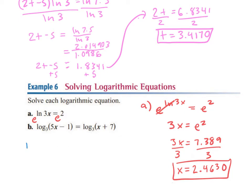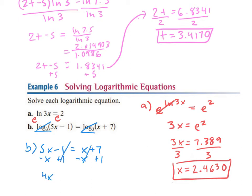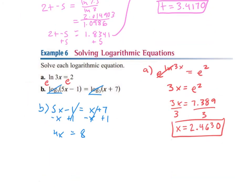For part b, we have log base 3 on each side of our equation. Anytime we have logs with the same base, one on each side, they cancel each other out and we just set the rest equal to each other. So we have 5x minus 1 equals x plus 7. We subtract x on both sides, add 1 on both sides, giving us 4x equals 8. Divide both sides by 4, so x equals 2.